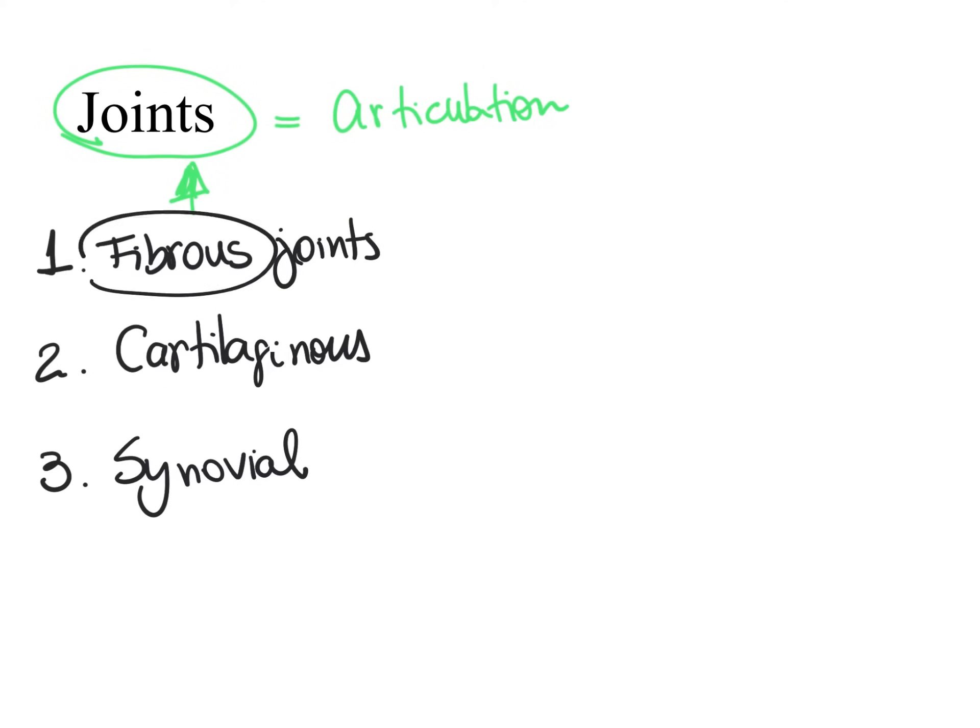In fibrous joints, we have dense fibrous connective tissue connecting the bones — specifically, dense irregular connective tissue. In dense irregular connective tissue, the fibers are irregularly arranged, which makes the tissue strong in all different directions. That makes fibrous joints very difficult to pull apart, and as a consequence, they permit very little or no movement between the bones.